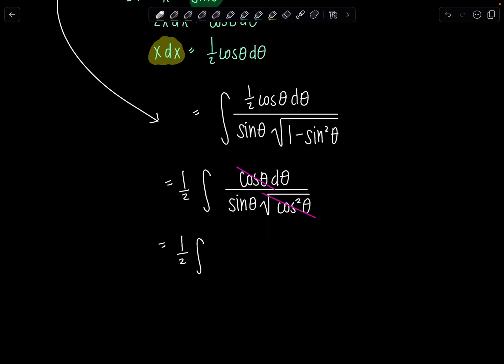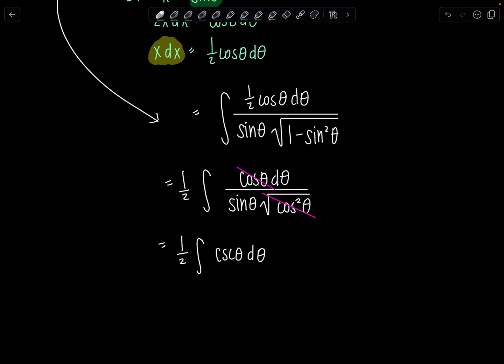And then now I can rewrite the integrand. It's 1 half integral cosecant theta d theta. And then remember for cosecant theta we have several versions of what the antiderivative is. I'll just go with the one that's easiest to remember. You just make it negative ln absolute value cosecant theta plus cotangent theta plus c. The other version is not negative on the outside, but you have to remember which one of these two is negative. I'll let you look that up.